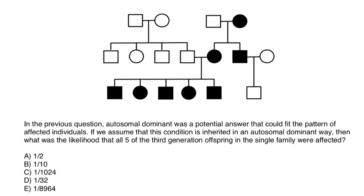Now we are moving to the second slide and the same pedigree. And here's the question. In the previous question, autosomal dominant was a potential answer that could fit the pattern of affected individuals. If we assume that this condition is inherited in an autosomal dominant way, then what was the likelihood that all five of the third generation offspring in the single family were affected? So here is the first generation, here is the second generation, and here is the third generation.